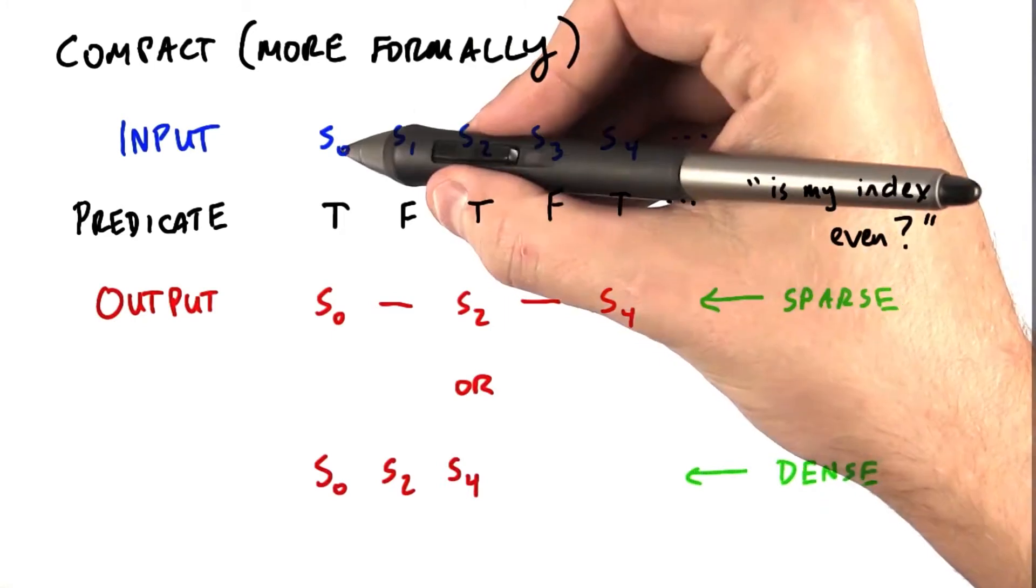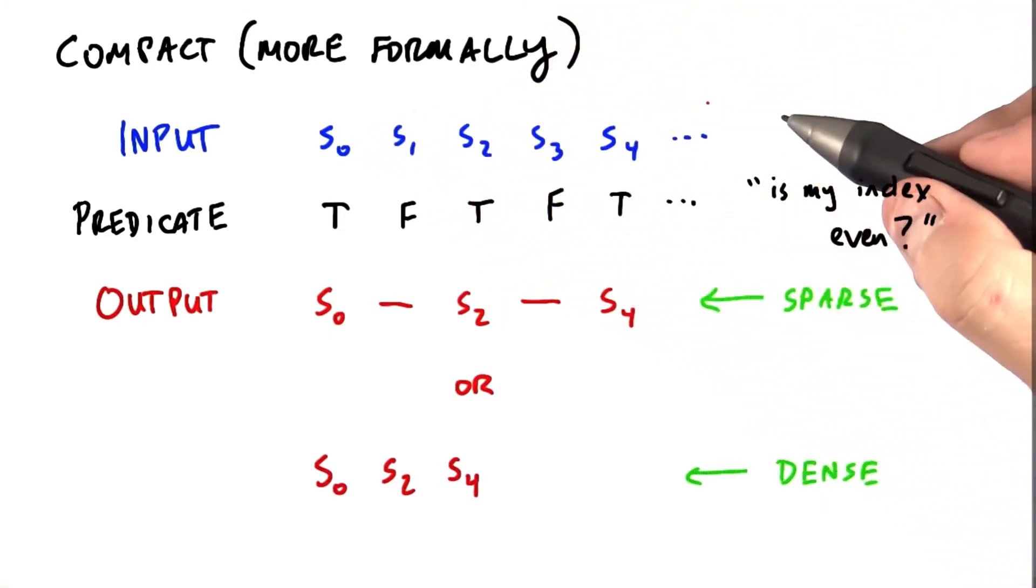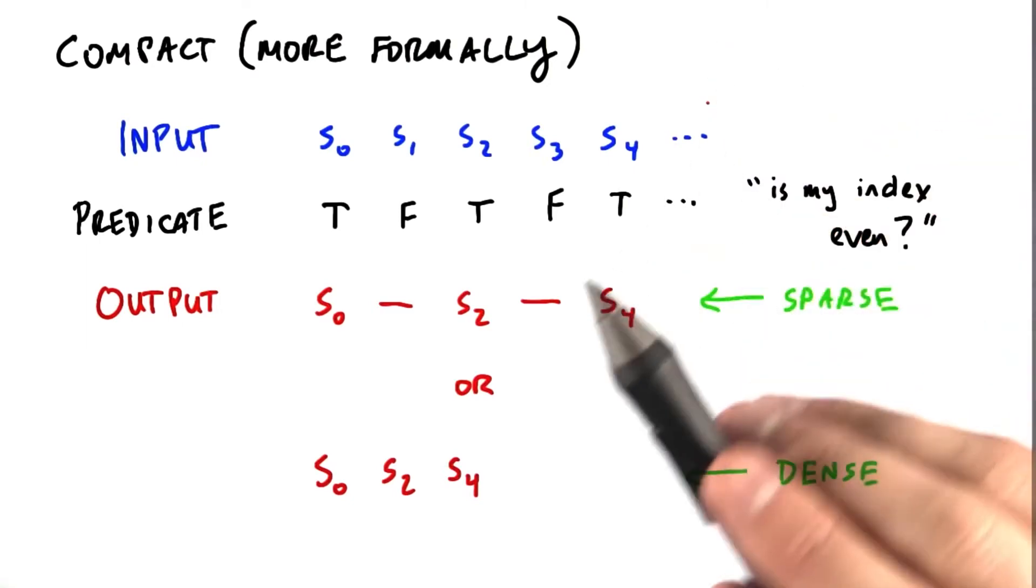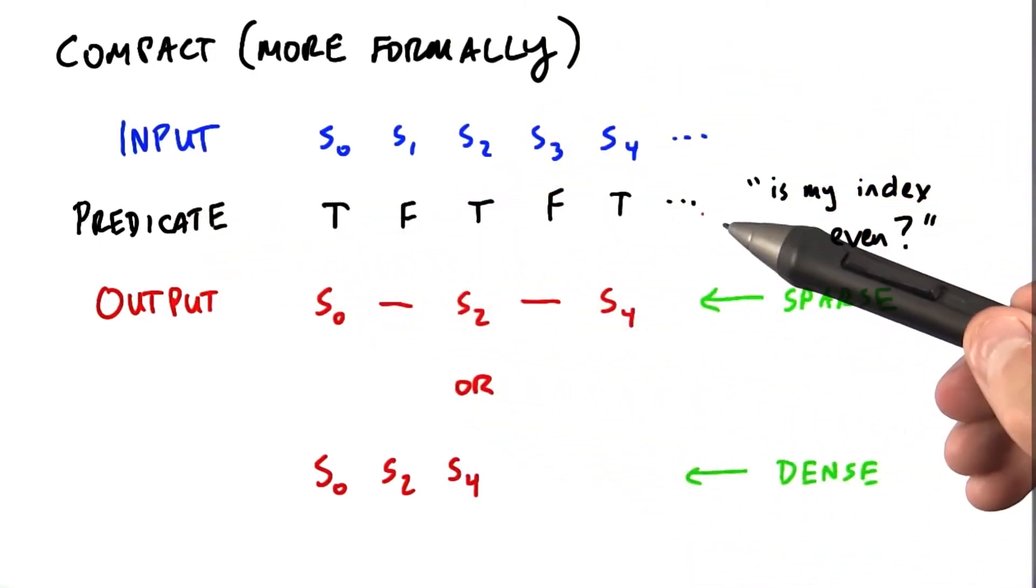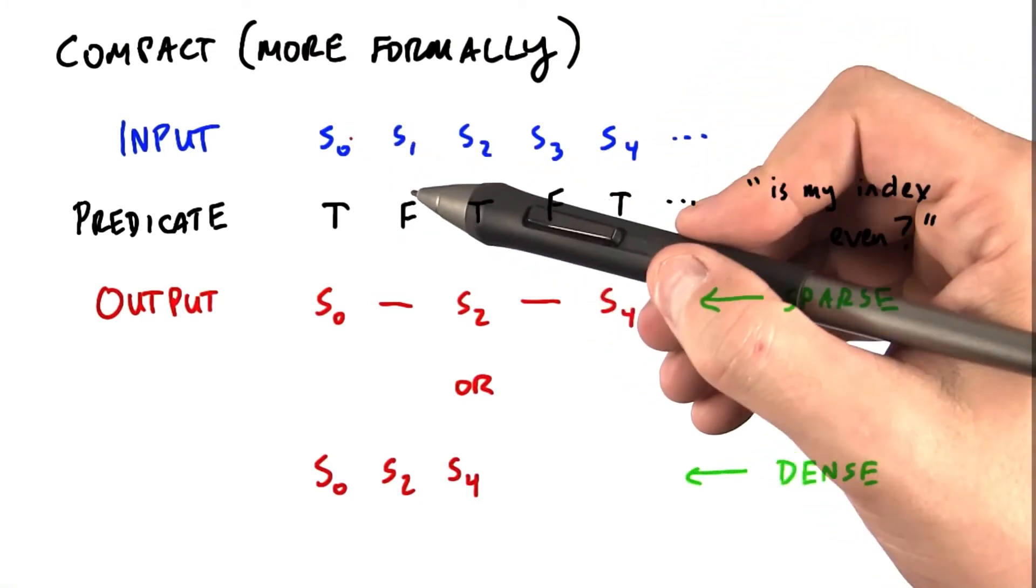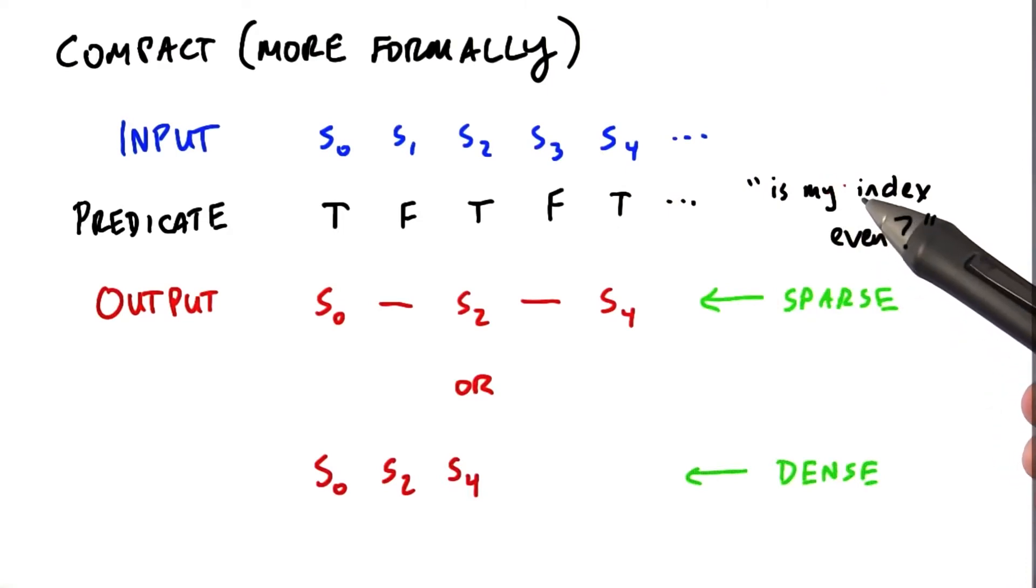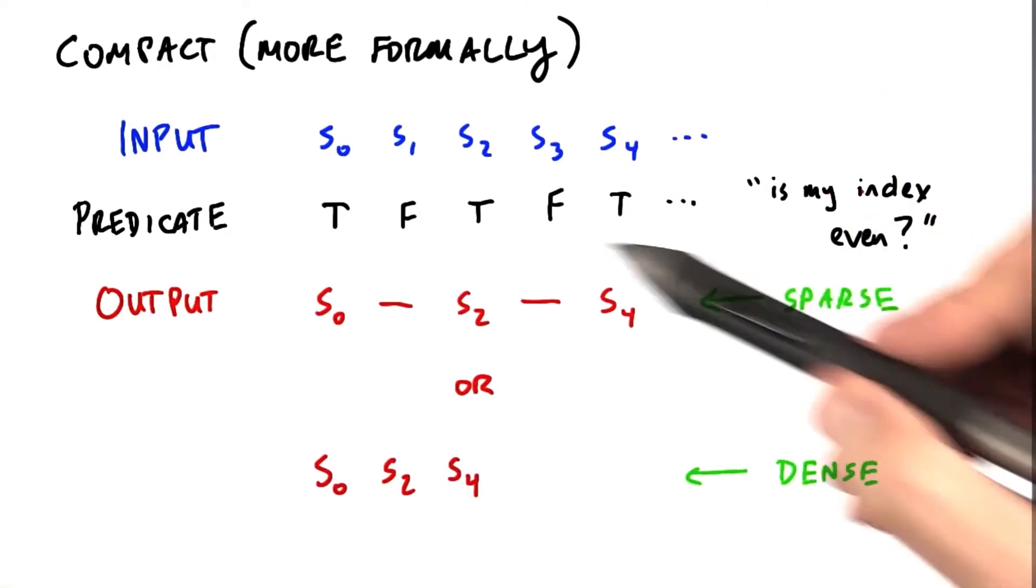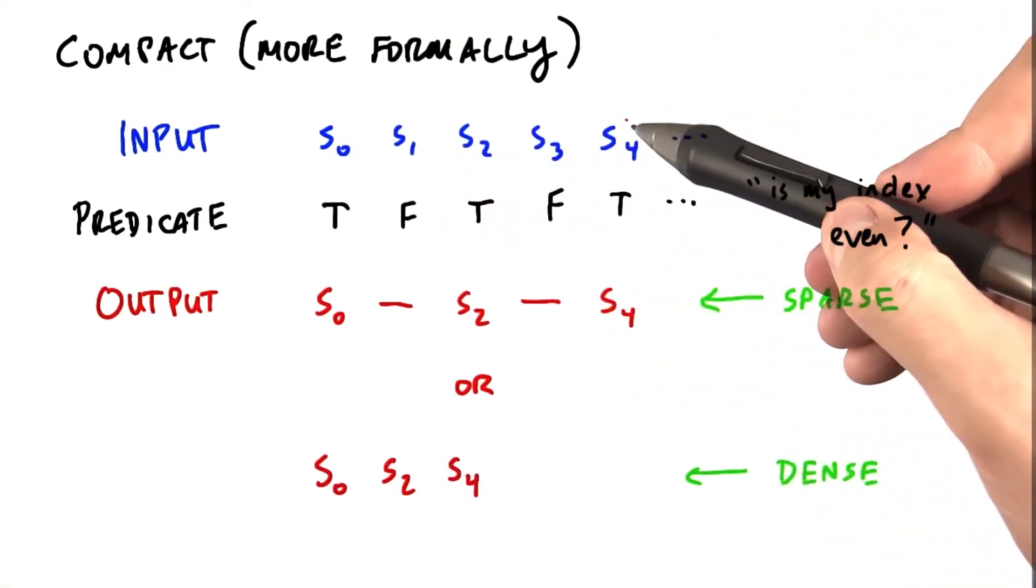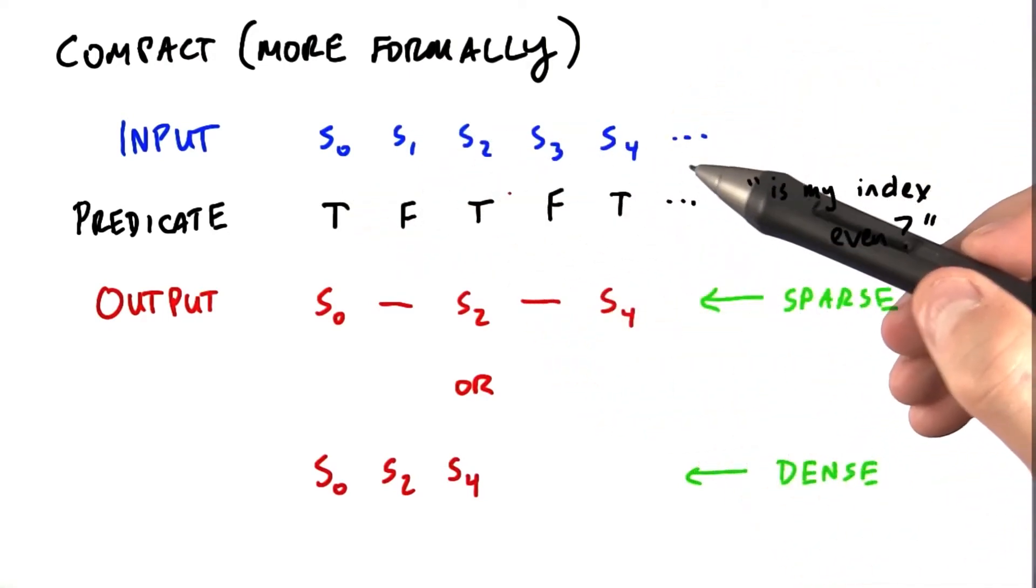We have a set of objects, S0, S1, S2, S3, S4, and so on. And we have what we call a predicate, and that's this line here. A predicate is a function that inputs an S object and returns true or false for that object. For instance, this predicate we're looking at here is, is my index even? So for S0, S2, and S4, the predicate returns true. For S1 and S3, the predicate returns false, and so on.